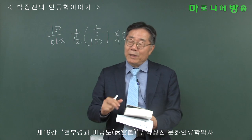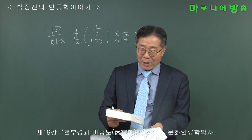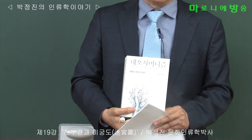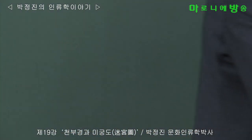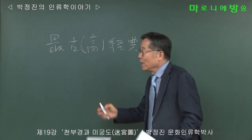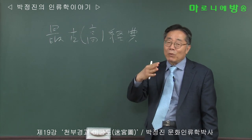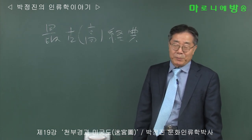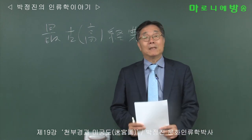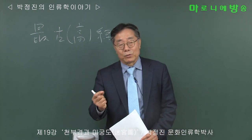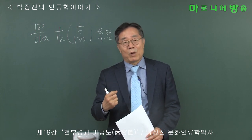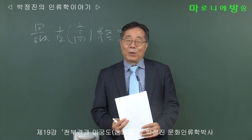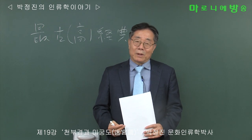이번 강의는 샤머니즘의 결정판이라고 할 수 있는 종합된 네오샤머니즘, 제가 최근에 완성한 책입니다. 이 책에 아주 상세히 되어있지만 좀 더 쉽게 독자들과 접하고자 얘기를 드리겠습니다. 천부경은 81자로서 천지인, 하늘과 땅과 인간의 모든 문제들을 설명한 경전입니다.